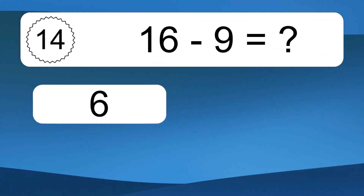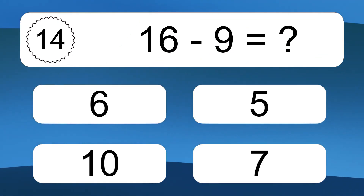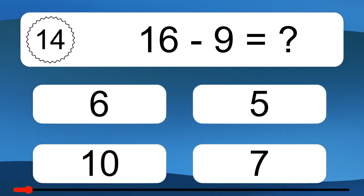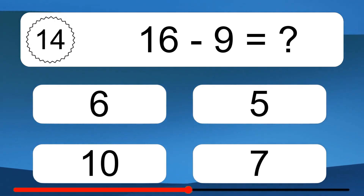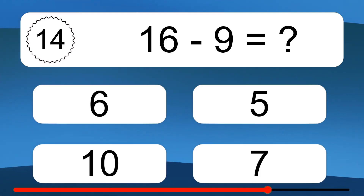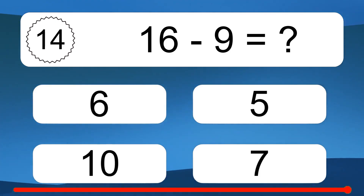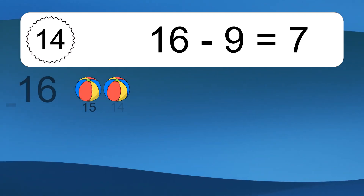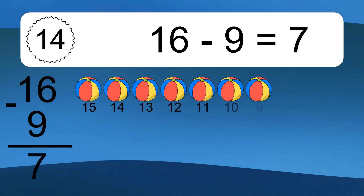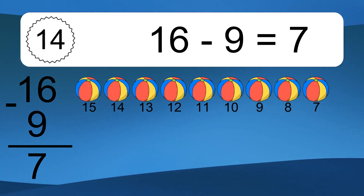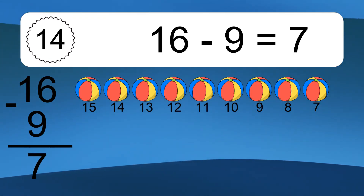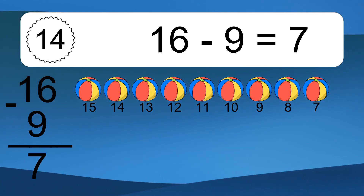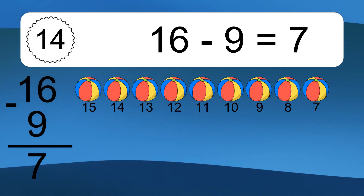16 minus 9 equals what? 16 minus 9 equals 7. Let's count it: 15, 14, 13, 12, 11, 10, 9, 8, 7.